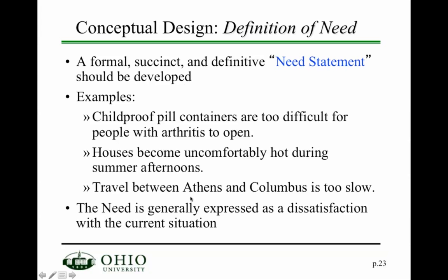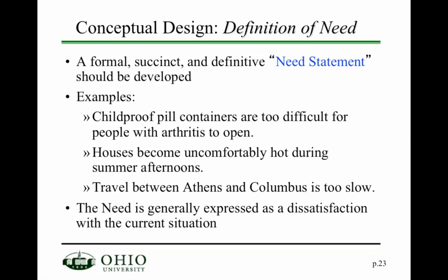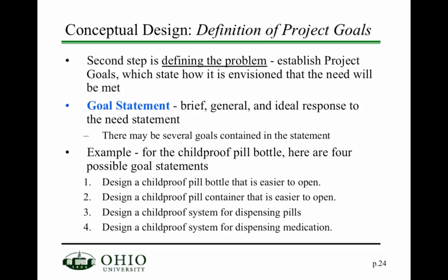The need statement doesn't specify what system is needed — it just identifies that there is a need for some means to address the problem. Need statements are typically expressed as a dissatisfaction with the current situation. The need statement then results in a goal statement, which is a brief, general, and ideal response to the need. For example, for the child-proof pill container need, the goal would be to design a child-proof pill bottle that's easier to open.